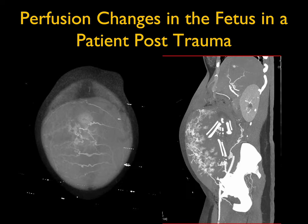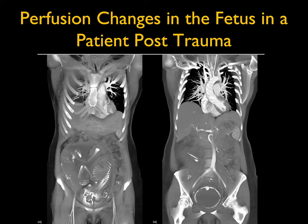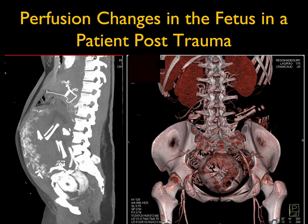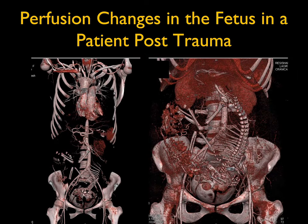Case four: a patient who is post-trauma and pregnant. You look for injury to the organs of the mother, but you also look at the placenta. If there's placental injury, you could see decreased enhancement of the placenta, and that may push you to deliver the baby, particularly if the child is over 30 weeks. Here you see the placenta and the fetus in good position. The patient is old enough to be delivered, and I am concerned about the placenta because there's not enough enhancement.